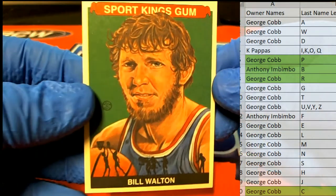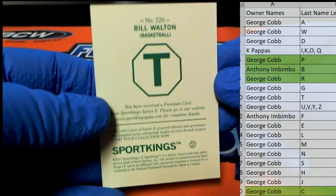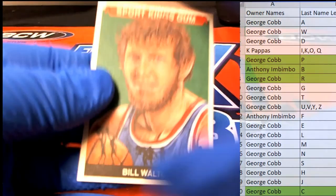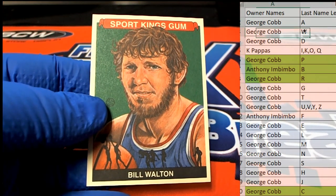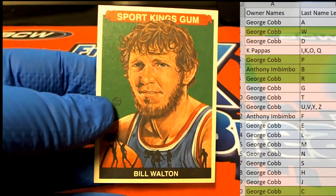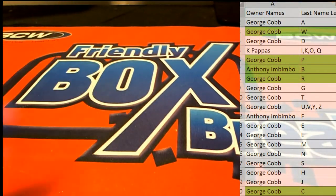Bill Walton baby. Check that out, Sport Kings Gum. Very nice, this is a premium card from the break. And letter W, George C. You'd be surprised in some of those. You'd be real surprised in some of those. Sport Kings, all right guys, very good.